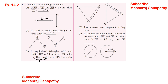Two squares are congruent if they have the same side length. OA, OB, RAI. OB is 3.5 cm, so AB is 3.5 cm.